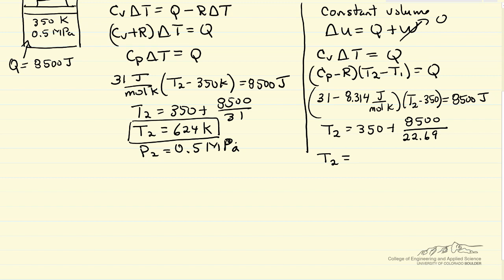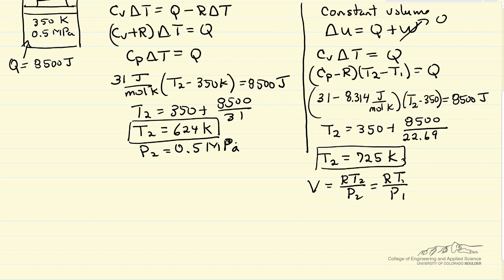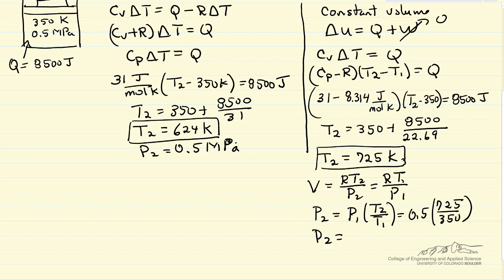Rearranging and solving for temperature, we get a final temperature of 725 Kelvin. Using the ideal gas law at constant volume, P2/P1 equals T2/T1. Rearranging: P2 equals P1 times T2 over T1, which is 0.5 megapascals times 725 over 350, giving P2 approximately 1.0 megapascals. So the pressure essentially doubled.